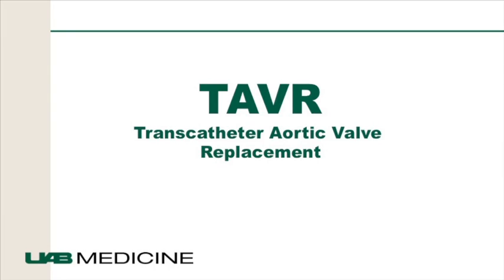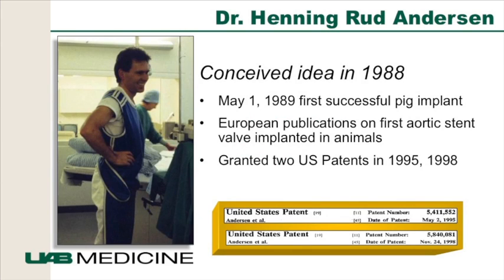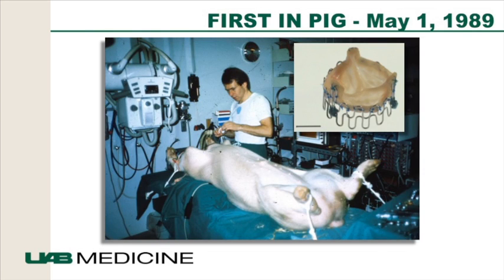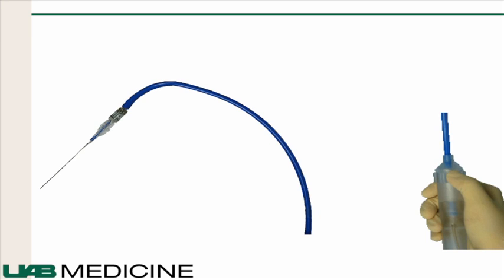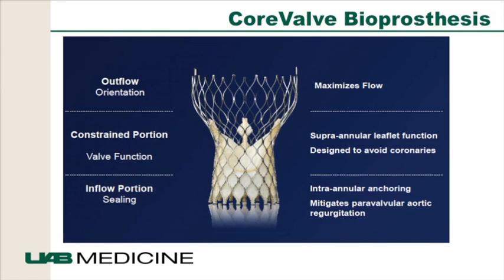The idea of TAVR was conceived in 1988 by Dr. Anderson, who performed the first successful pig implant in 1989, and it was granted two US patents in 1995 and 1998. This led to the birth of the Edwards Sapien heart valve — a bovine tissue valve with pericardial mapping implanted on a stainless steel frame, delivered on a deflectable catheter around the aortic arch. The other valve is the self-expanding CoreValve prosthesis, which has an outflow constrained portion, an inflow sealing portion, and is a supranular design.